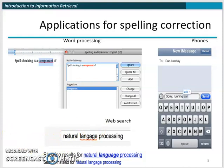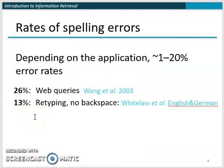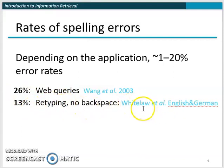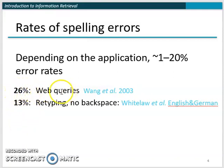According to some studies on the rates of spelling errors, it largely depends on the application. For web queries, there are around 26% errors — so out of every four words, at least one word is misspelled. That is a very large number. For retyping, an experiment done by Whitelaw asked people to retype Wikipedia articles without using backspace. Even after retyping, there were still 13% spelling errors. But we are mainly concerned with errors in web queries.